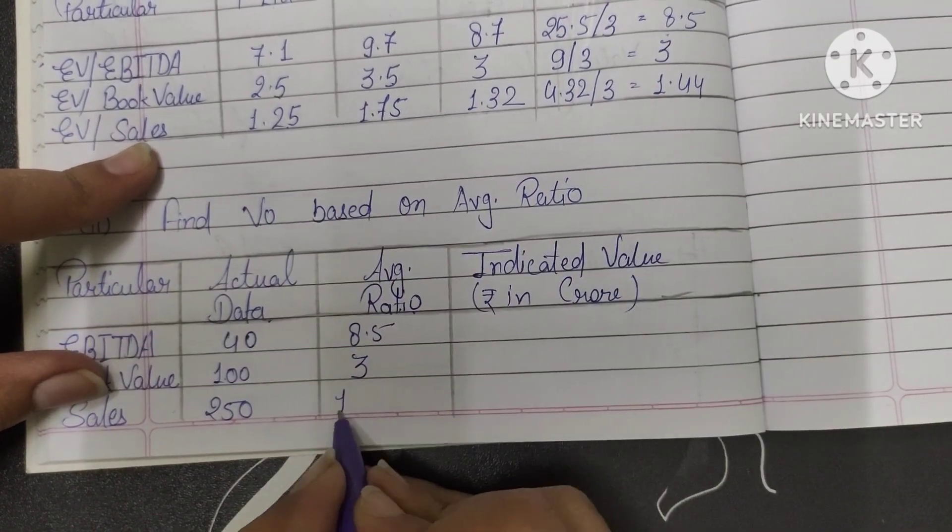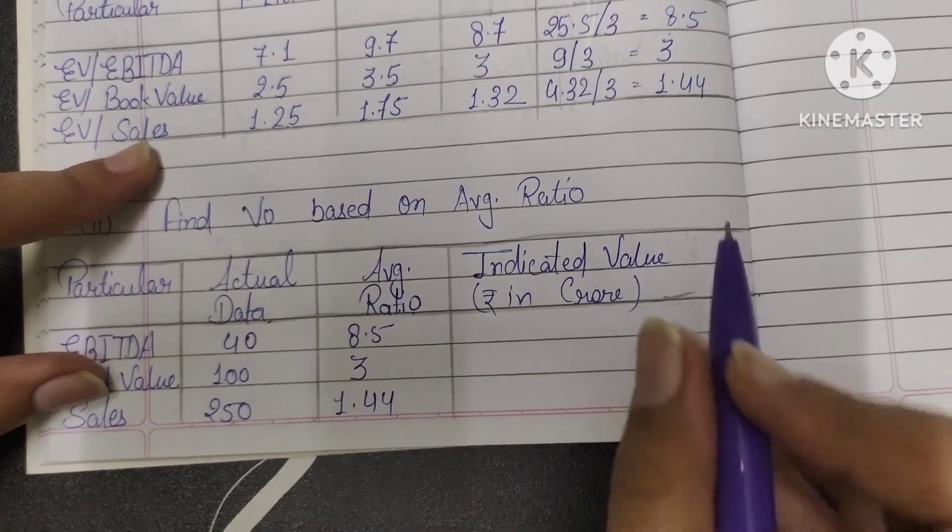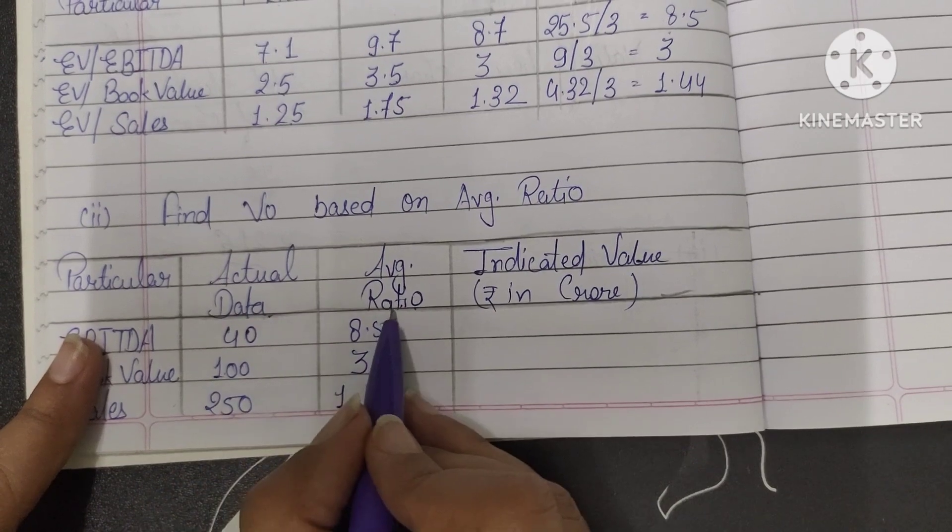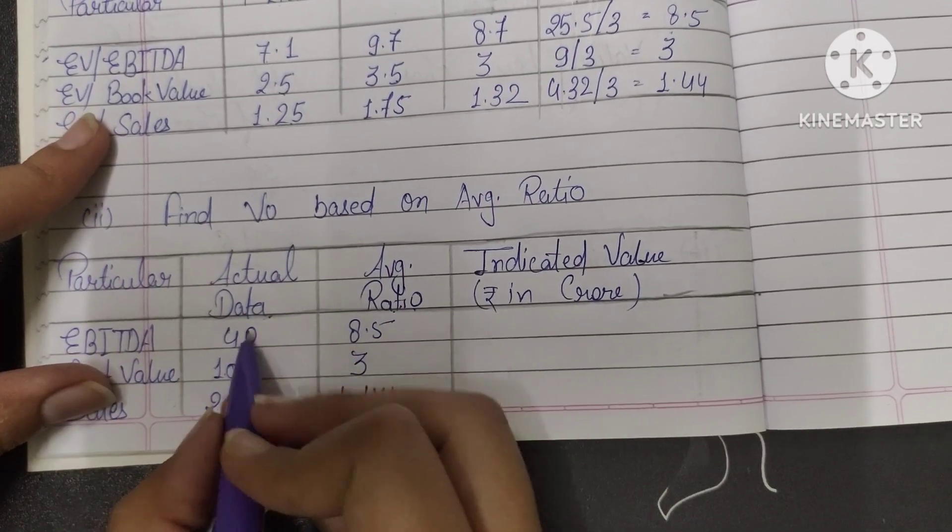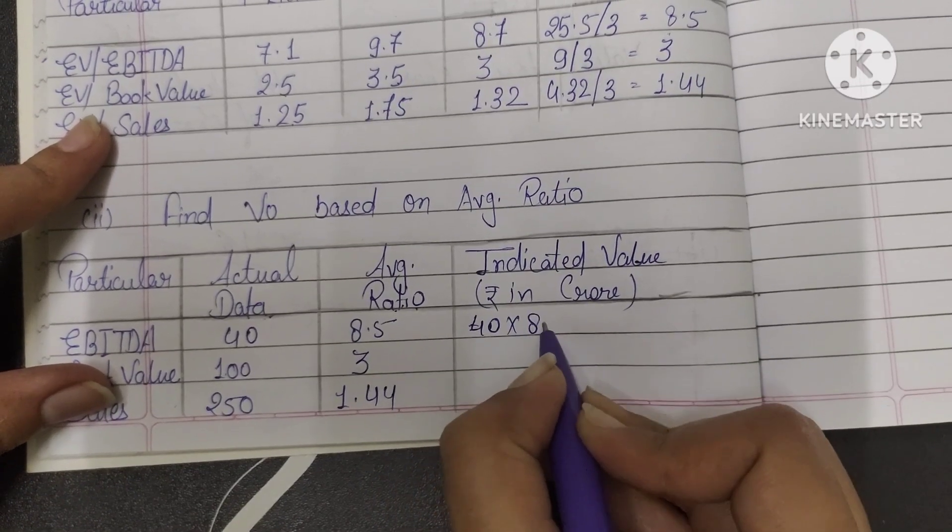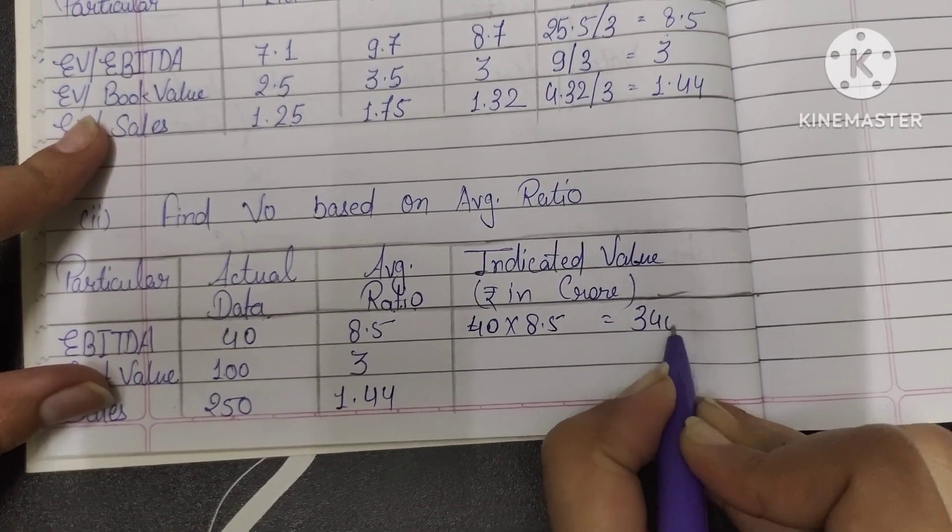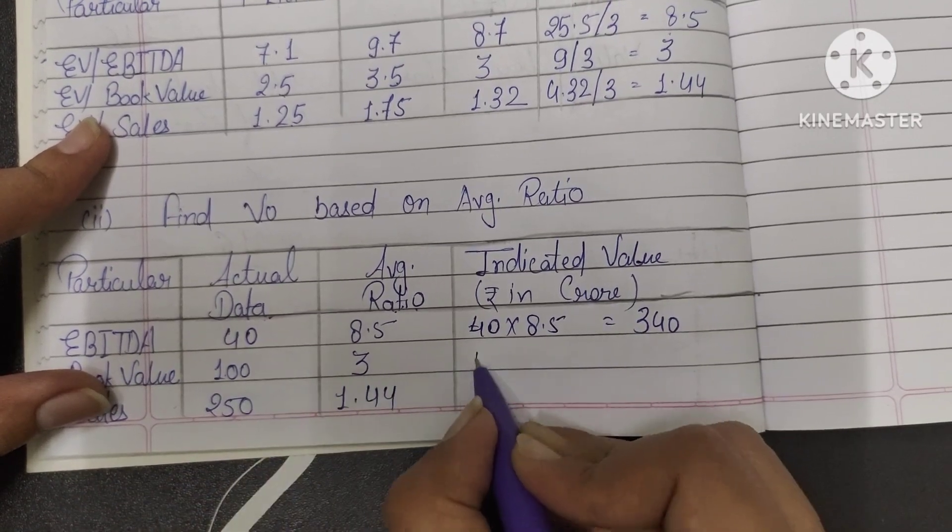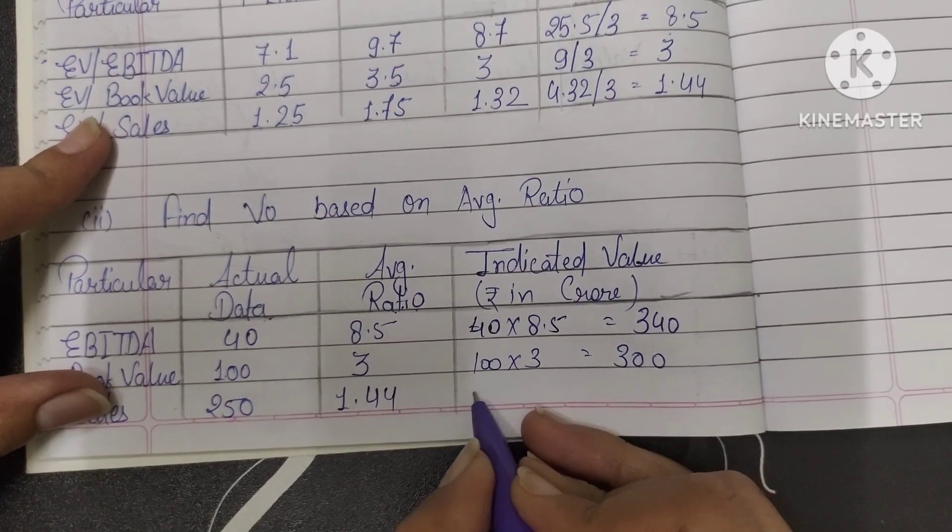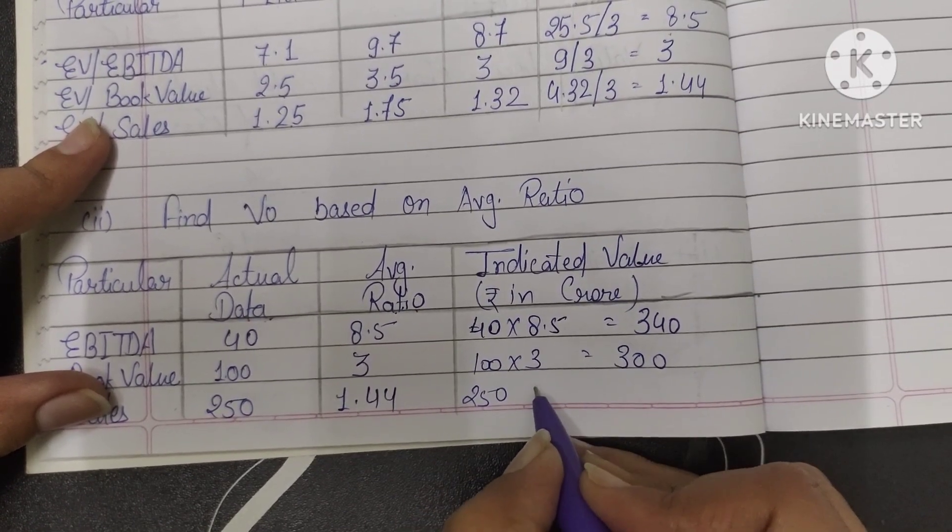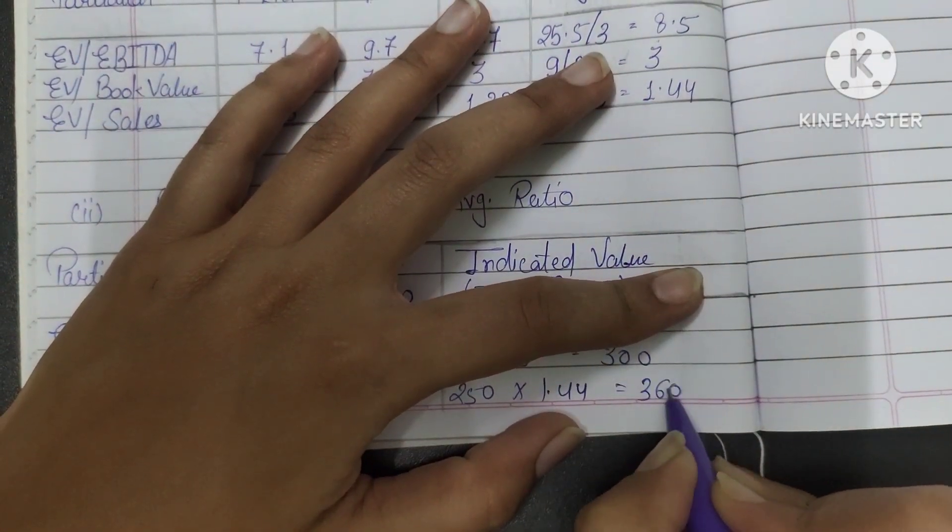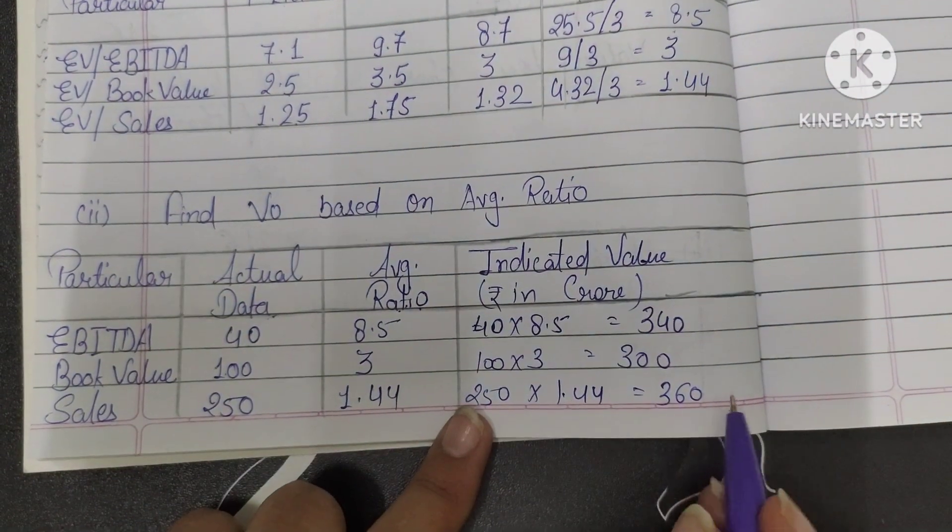Now we have to calculate indicated value. So simply what I've written is, you take actual data, multiply by average ratio. So 40 multiply 8.5, that will be, 40 multiply 8.5 is 340. 100 multiply 3, that is 300. And 250 multiply 1.44, that is 360. Check if everything is there.